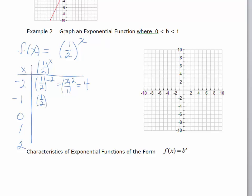So, if we have 1 half to the negative 1, really that's just the reciprocal of 1 half, which is 2. 1 half to the 0 is equal to 1, 1 half to the 1st power is equal to 1 half. And 1 half squared is equal to 1 fourth.